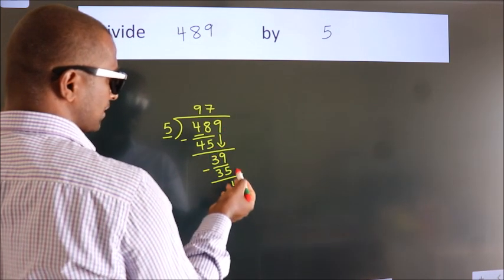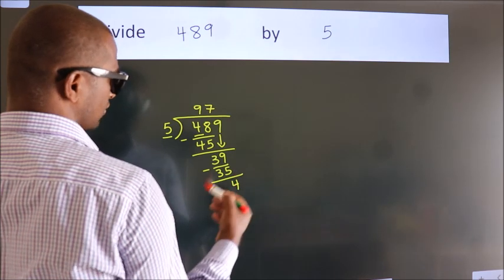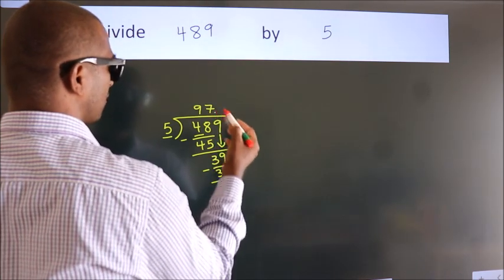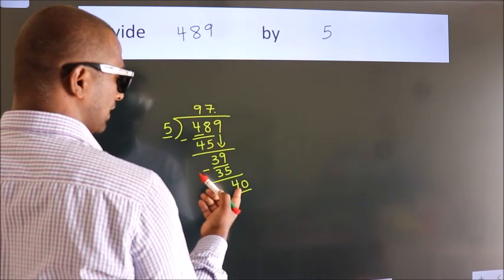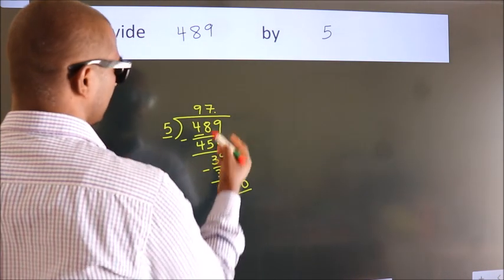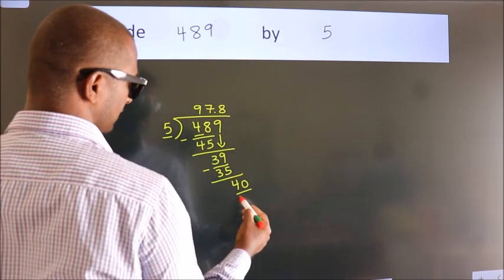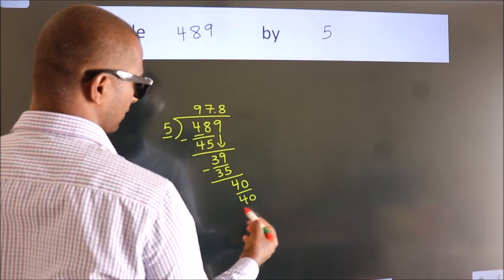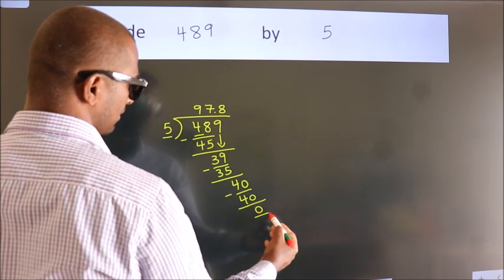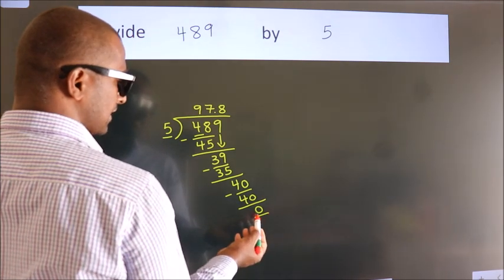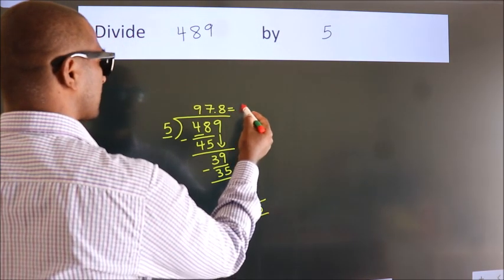After this, no more numbers to bring down. So what we do is put a dot and take 0. So 40. When do we get 40 in the 5 table? 5 eights, 40. Now we subtract. We get 0. We got remainder 0, so this is our quotient.